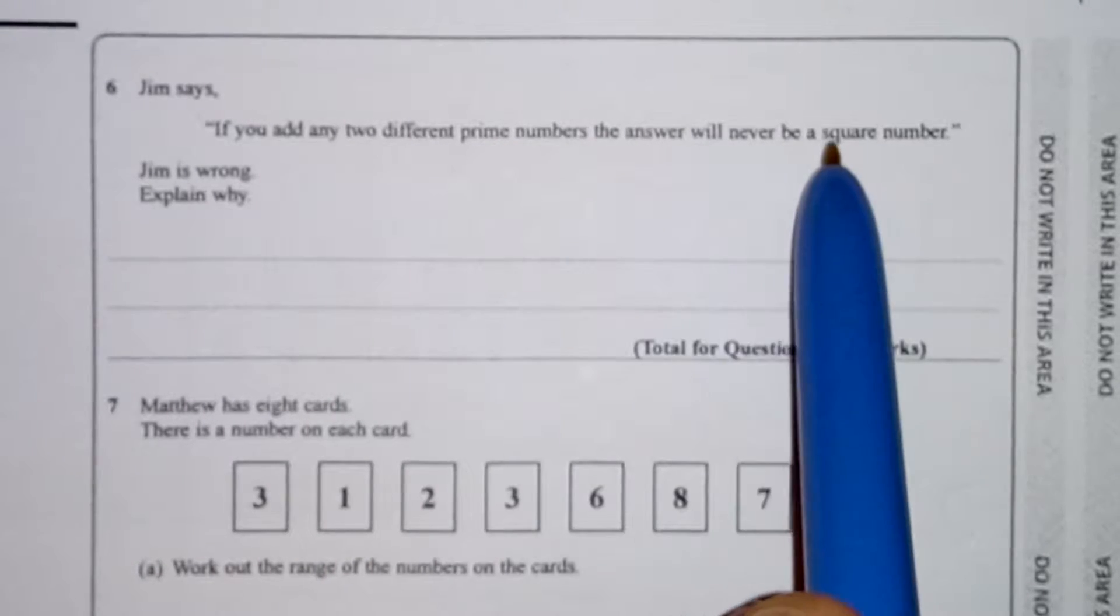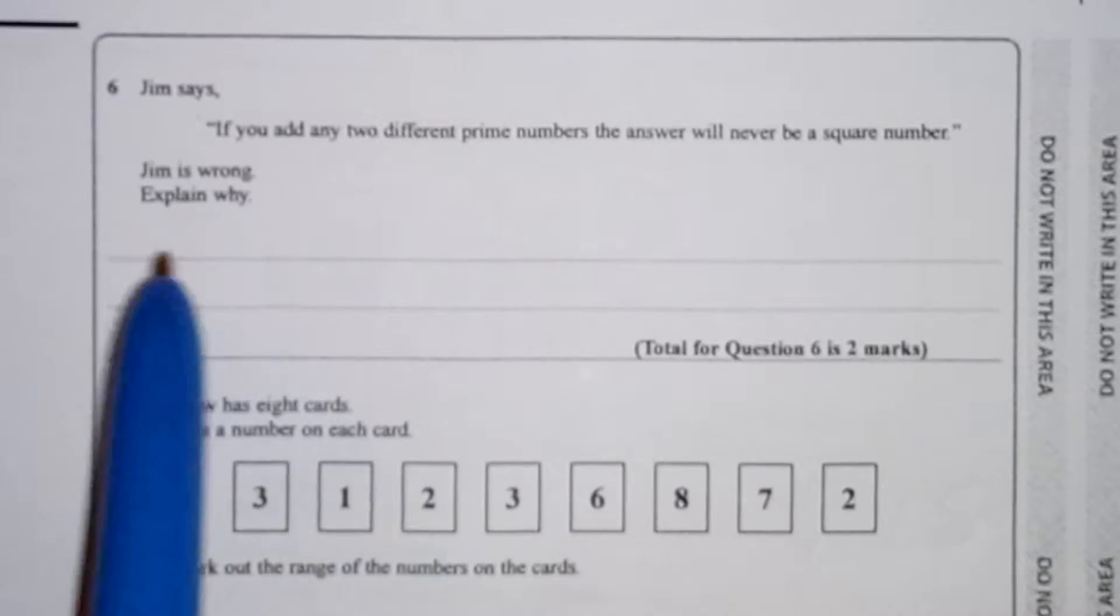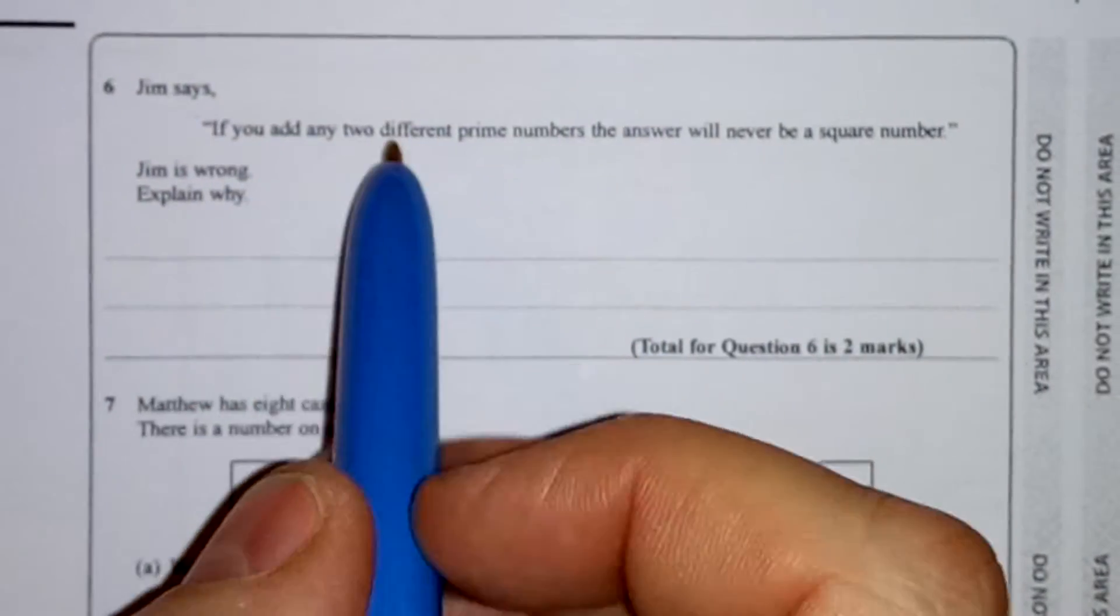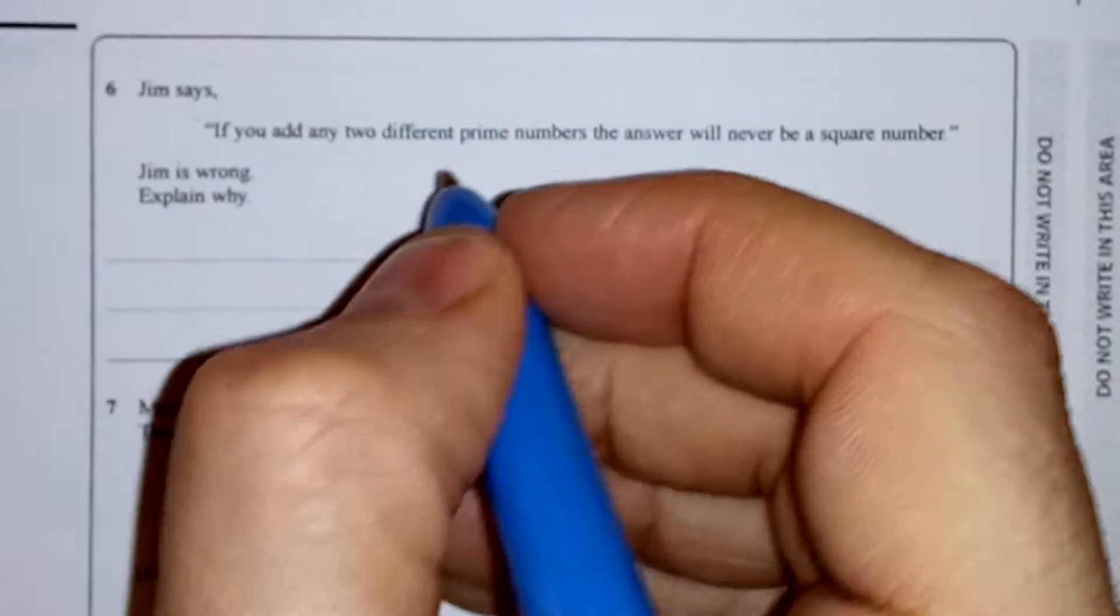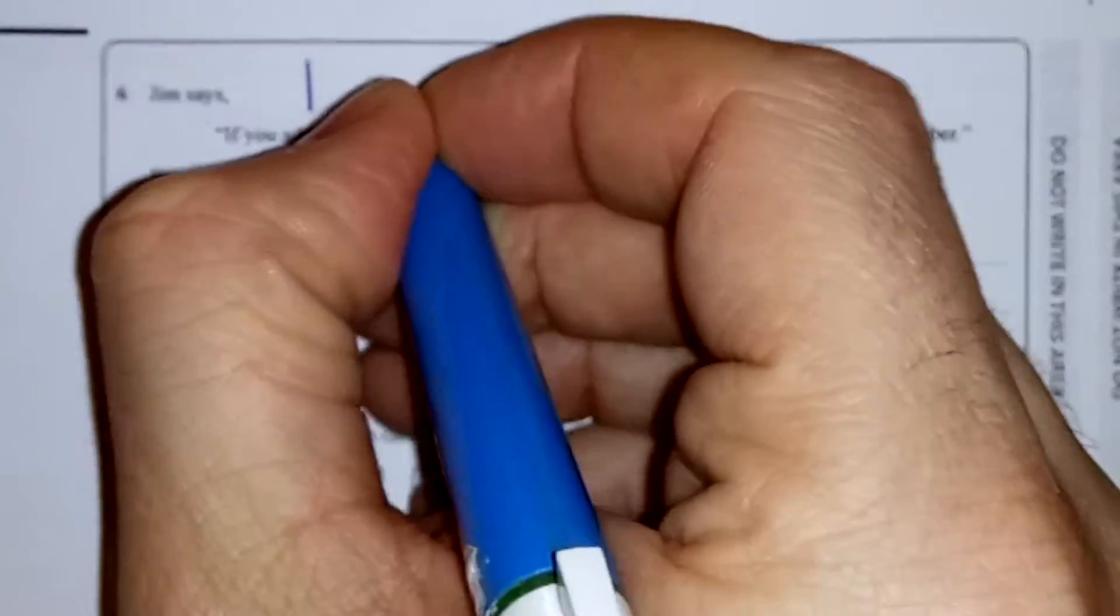Jim says if you add any two different prime numbers, the answer will never be a square number. Jim is wrong. Explain why. Well, let's think about square numbers. Square numbers are 1 times 1 is 1, 2